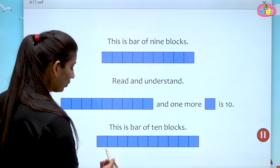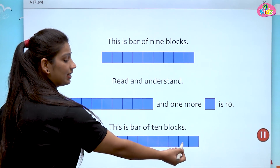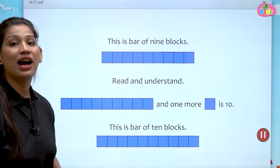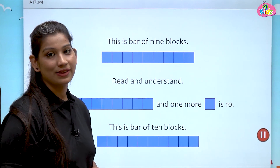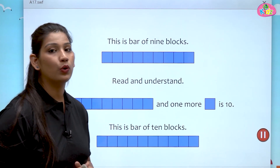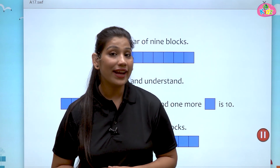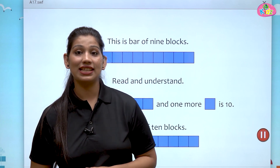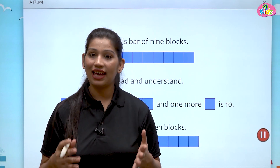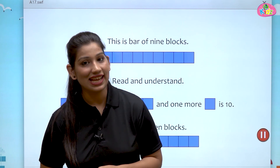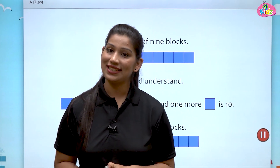Let us count: 1, 2, 3, 4, 5, 6, 7, 8, 9, 10 — this is a bar of 10 blocks. 9 and 1 more is 10. You know students, how we write the number name of 10? It is T-E-N. That's all for today's session.